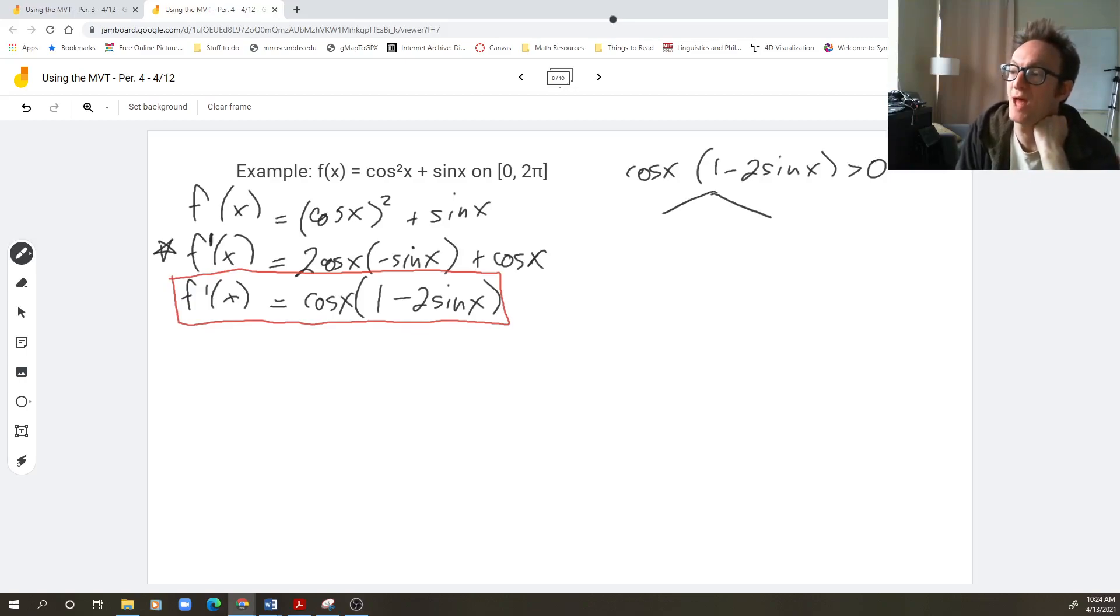So let's do that. When is cosine x positive? This is easily done because I can make a picture and using the definition of cosine involving the unit circle, cosine is the x coordinate. And so cosine will be positive all of these places.